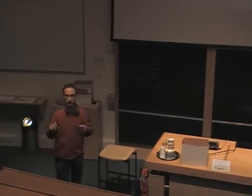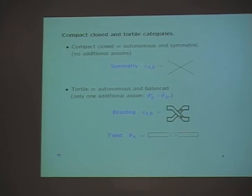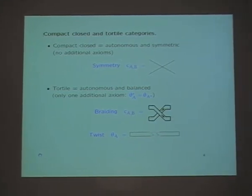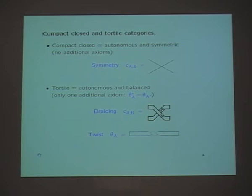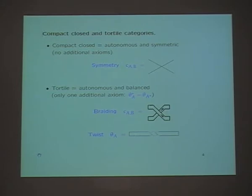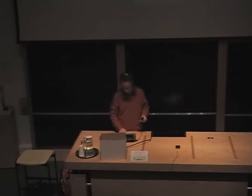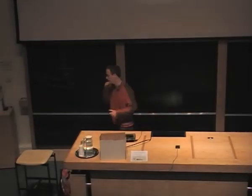It turns out that if you have a braiding and the autonomous structure, you automatically have a twist, because you can draw this yanking diagram. And it does have one additional axiom. I will talk just about tortile categories later, because anything you say about a tortile category immediately becomes a statement about compact closed categories simply if you assume the braiding is actually a symmetry, or if you assume additional axioms.